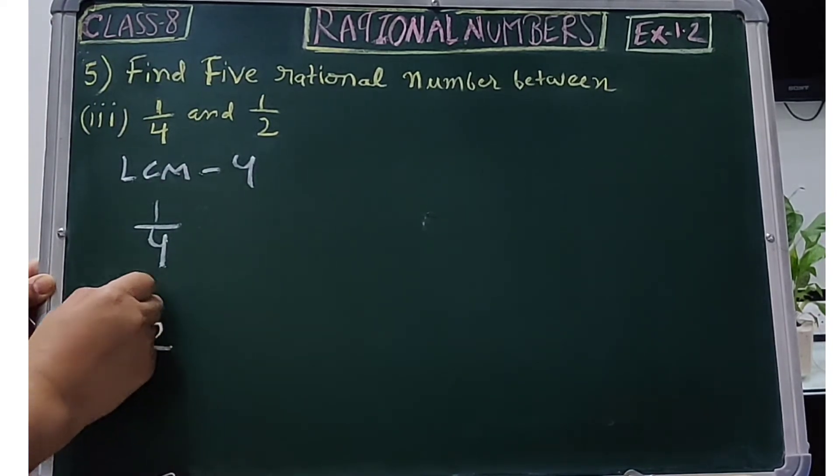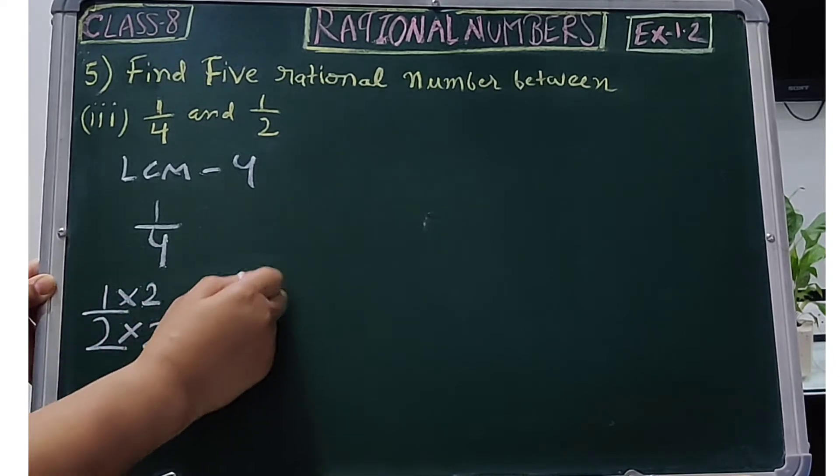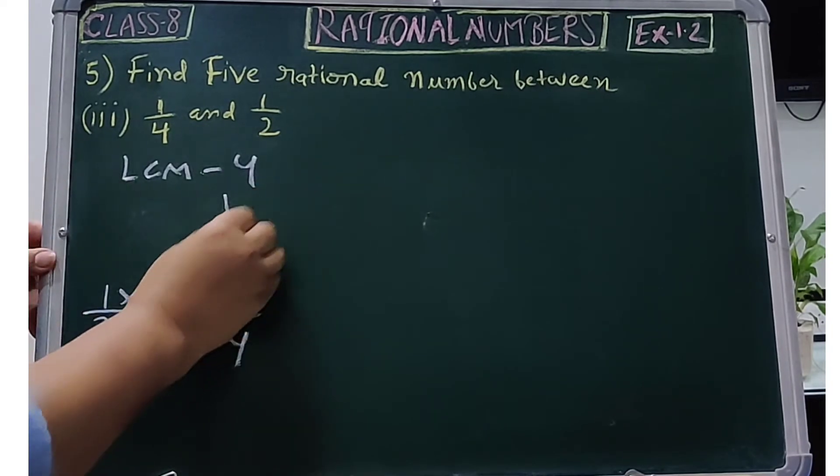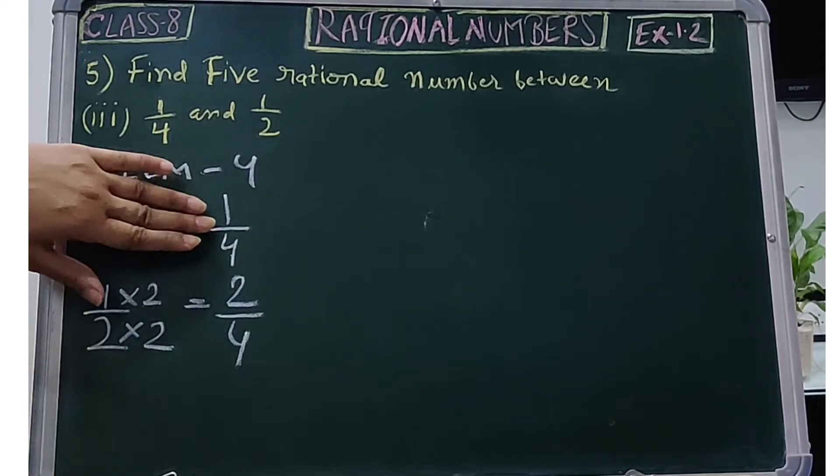If we multiply 2 by 2, what will happen? We get 2/4. Between 1/4 and 2/4, we cannot find 5 rational numbers.